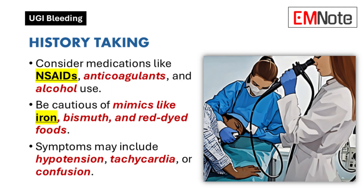It is also critical to review medication use, such as salicylates, glucocorticoids, non-steroidal anti-inflammatory drugs, and anticoagulants, as well as alcohol intake. Clinicians should consider mimics of gastrointestinal bleeding, such as ingested iron, bismuth, red dye-containing medications, or foods like beets.